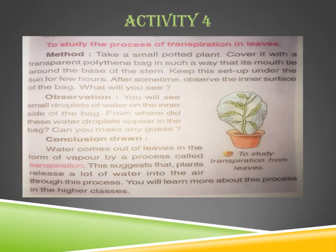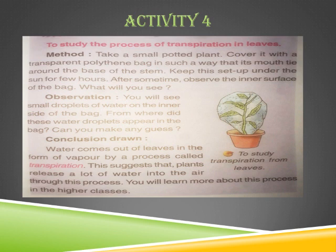Now Activity 4. What do we see in Activity 4? It is the process of transpiration. The experiment: to study the process of transpiration in leaves, a small potted plant is taken. Cover it with a transparent polythene bag in such a way that the mouth is tied around the base of the stem. Keep this setup under the sun for a few hours.